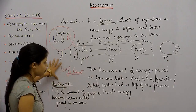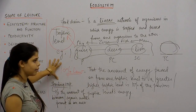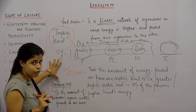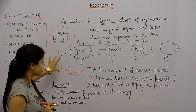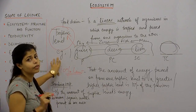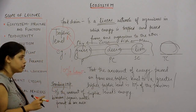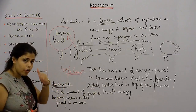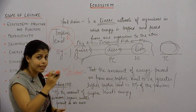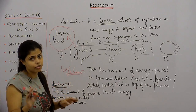As discussed with the 10 percent law, if someone asks why the number of trophic levels is restricted in a food chain, it is because the ecosystem follows the 10 percent law — the amount of energy passed on from one trophic level to a higher trophic level is only 10 percent of the previous trophic level's energy.